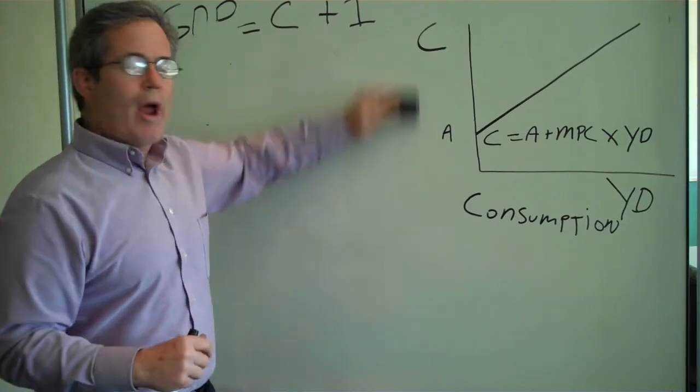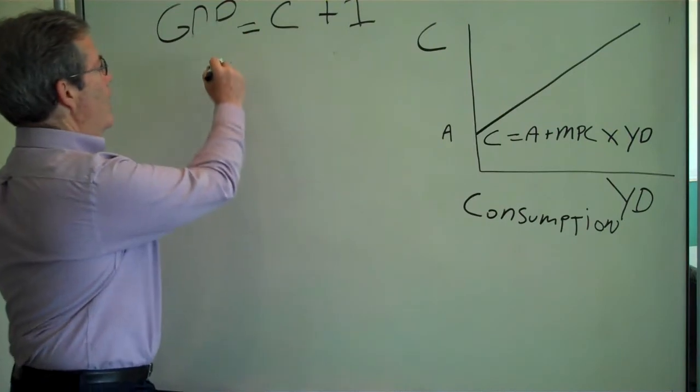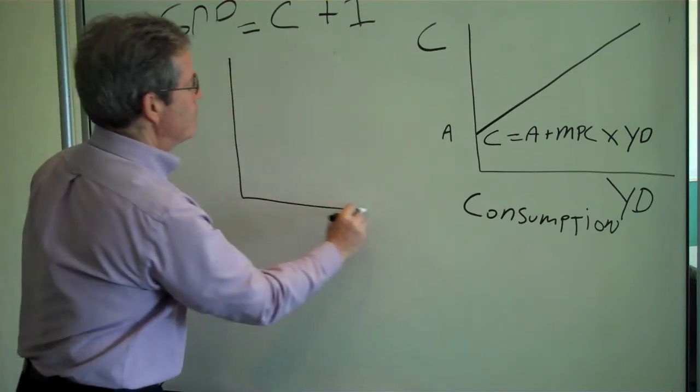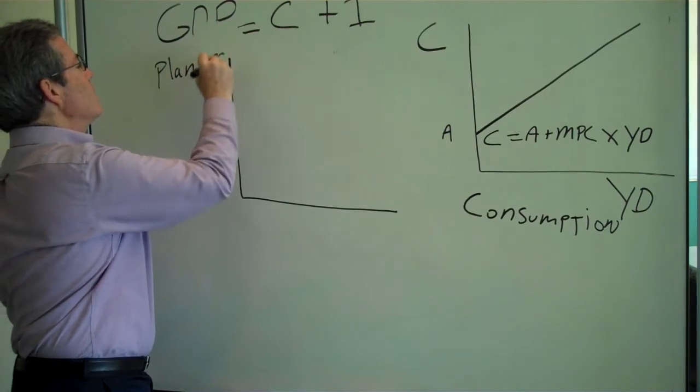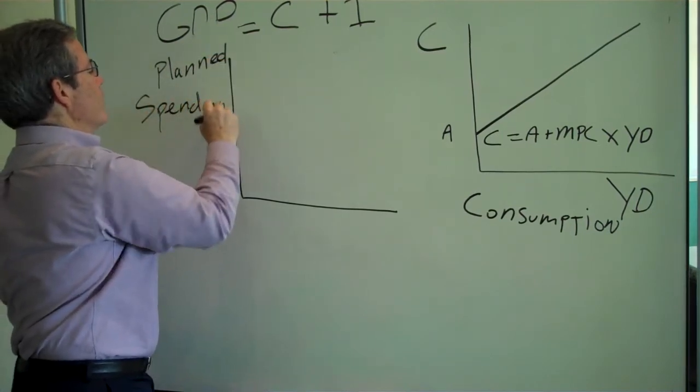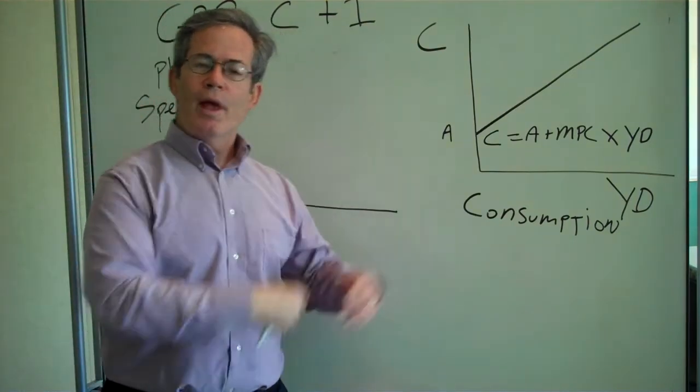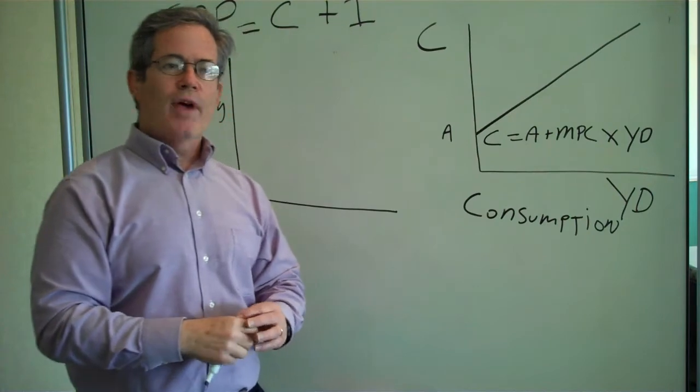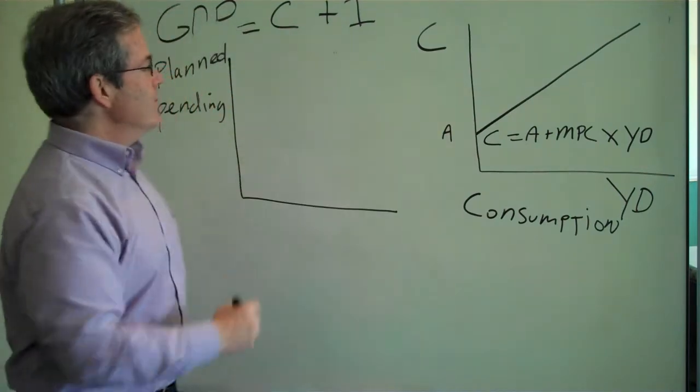Well, we're going to draw a new graph. And on our new graph, we're going to call it planned spending. That is how much households want to consume, how much businesses want to invest. And we're just going to add these two things together.